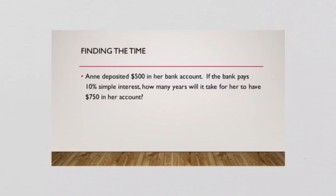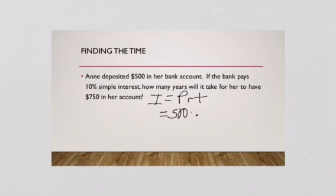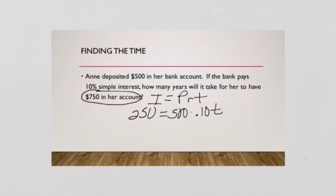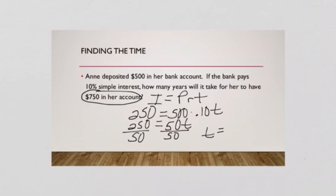Ann deposited $500 in her account. If the bank pays 10% simple interest, how many years will it take for her to have $750 in her account? We use I equals PRT. She deposited $500, the rate is 10% which is 0.10, and we don't know the time. The interest we need to earn is $250 — because she already has $500 and needs $750. So $250 equals 500 times 0.10 times T, which gives us 50T. Dividing both sides by 50, T equals 5 years.